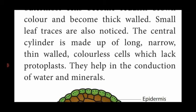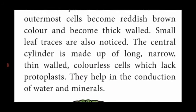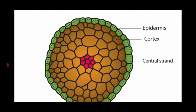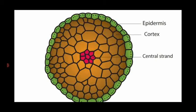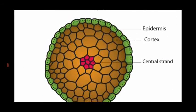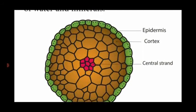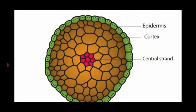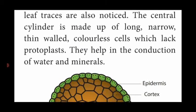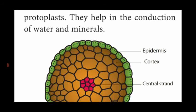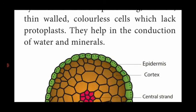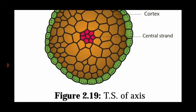The central region of the axis is made up of wide, long, narrow, thin-walled, colorless cells which lack protoplast. These colorless cells are present inner to the epidermis. The second region — cortex — is made up of wide, long, narrow, thin-walled, colorless parenchyma cells responsible for conducting water and mineral salts. At the center, there is a colored region which is red in color, known as the central strand. This is the structure of the T.S. of Funaria axis.